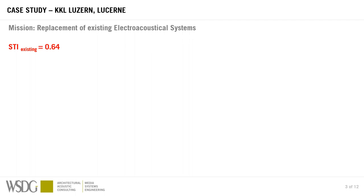The hall already had a sound system, which was actually really good. It was a point source system with an STI value of 0.64, which is really excellent — a very good value. So the mission of the new system was certainly to retain that same level of quality. At the same time, the old system was really complex in the setup. A lot of manpower was used for it, meaning a lot of downtime for the venue because it couldn't be rented out while reconfiguring for the next event. So the new system also needed to be quicker in setup times.